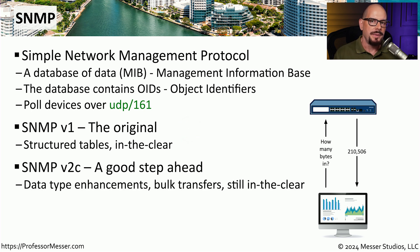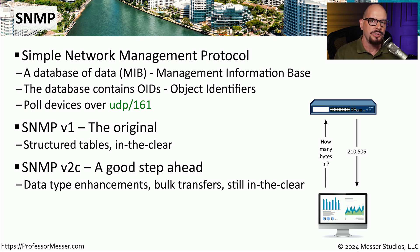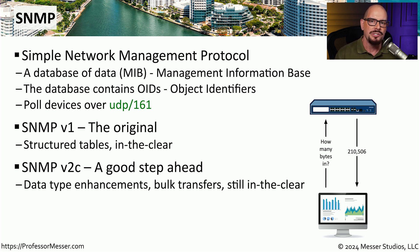A newer version, SNMP version 2 — sometimes referred to as SNMP version 2c — was released as an improvement to version 1. It is able to query large chunks of data and has more efficient communication to the device. However, the entire communication remained non-encrypted, or in the clear, so anybody tapping that connection would be able to see the entire communication.